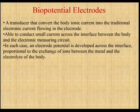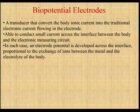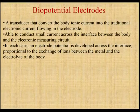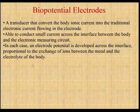Now we see the basics of biopotential electrodes. Here we use a transducer to convert the body's ionic current into traditional electric current. When going for electrode measurement, it is able to measure the small current across the interface between the body and the electrical measuring unit. The electrode potential is developed across the interface, and it is proportional to the exchange of ions between the metal and the electrolyte of the body.